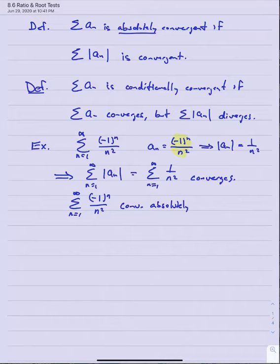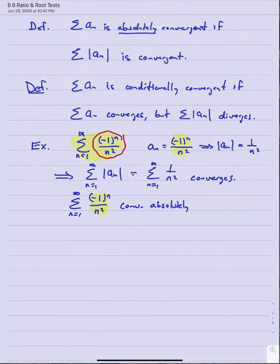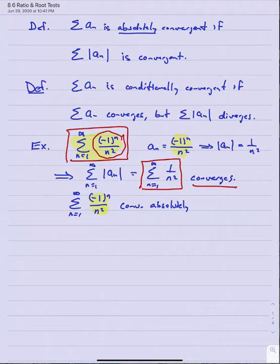That just means the series of the absolute values of these general terms converges. We're talking about a different series — one in which we take the absolute values of the general terms and form a new series. If that series of absolute values converges, then we call the original series an absolutely convergent series.